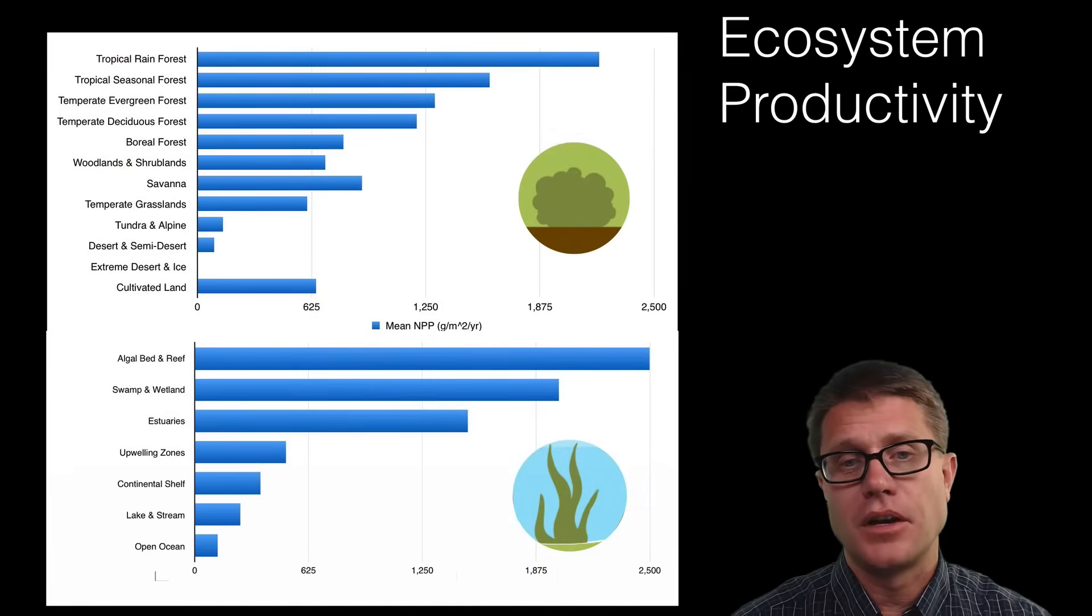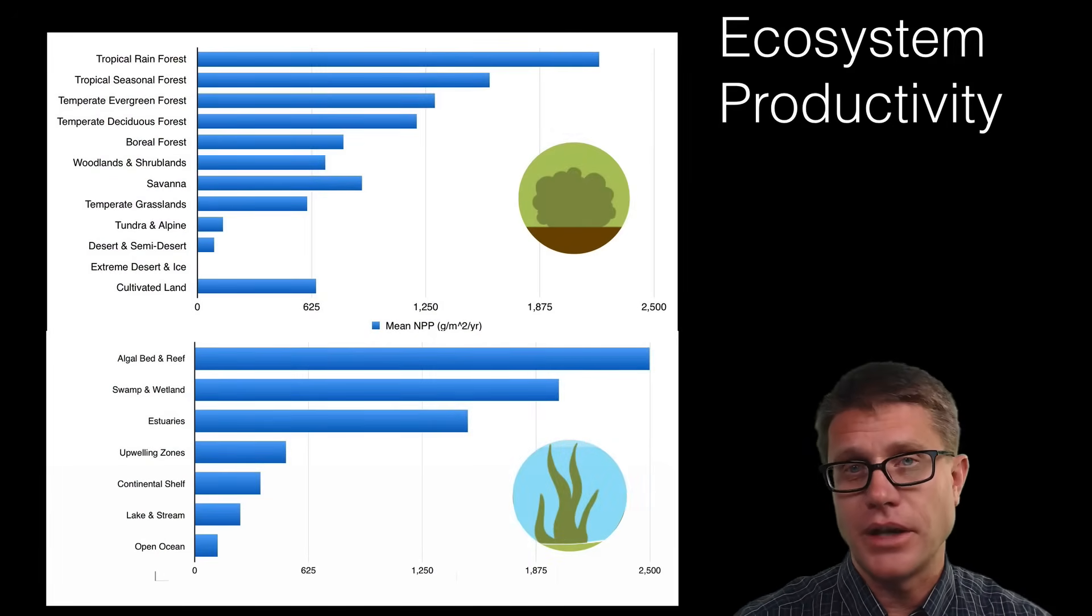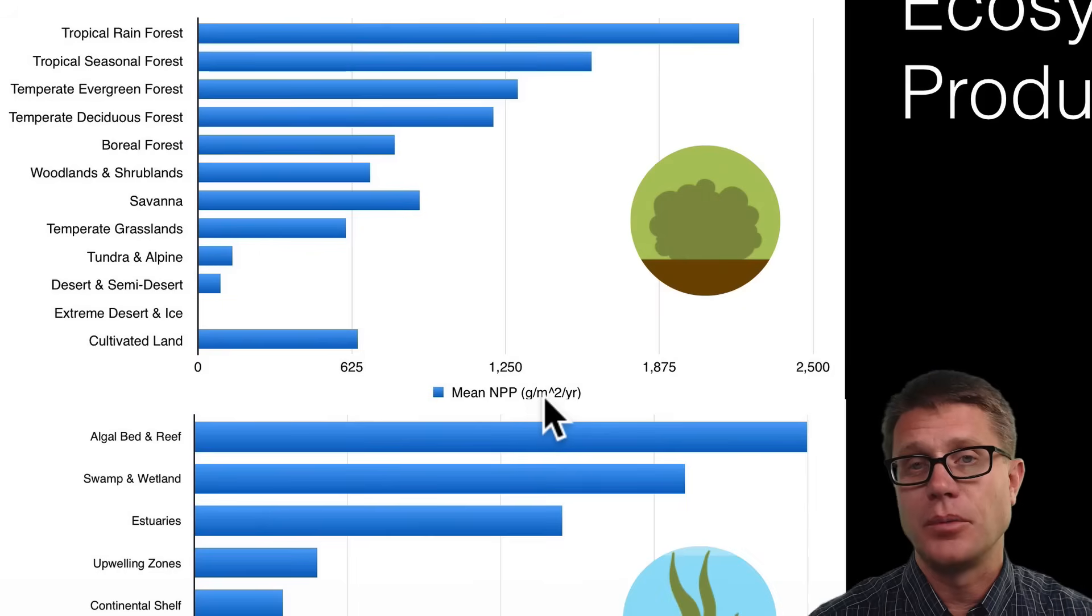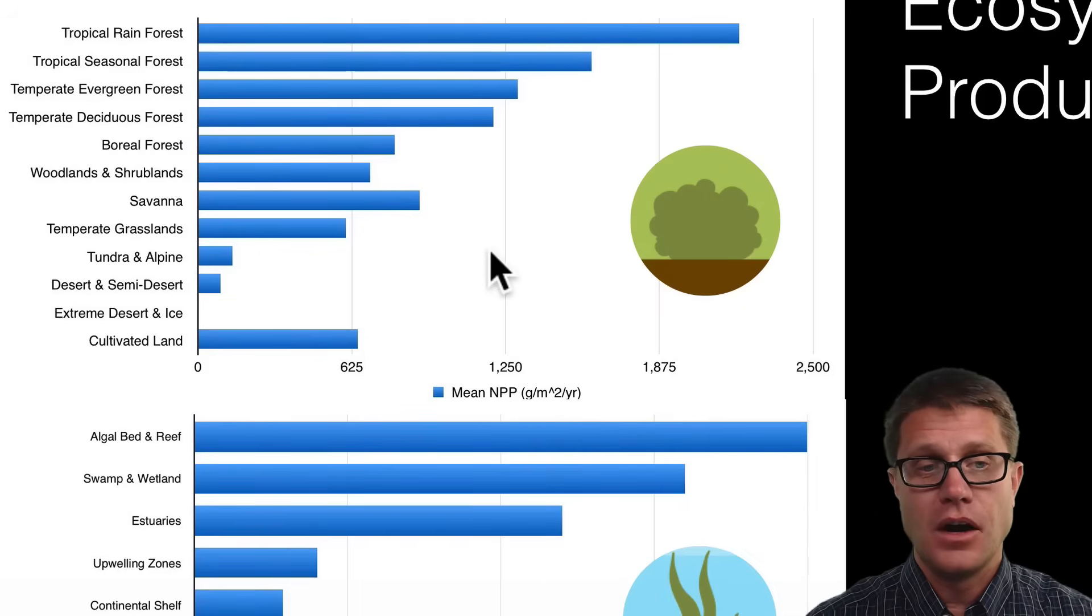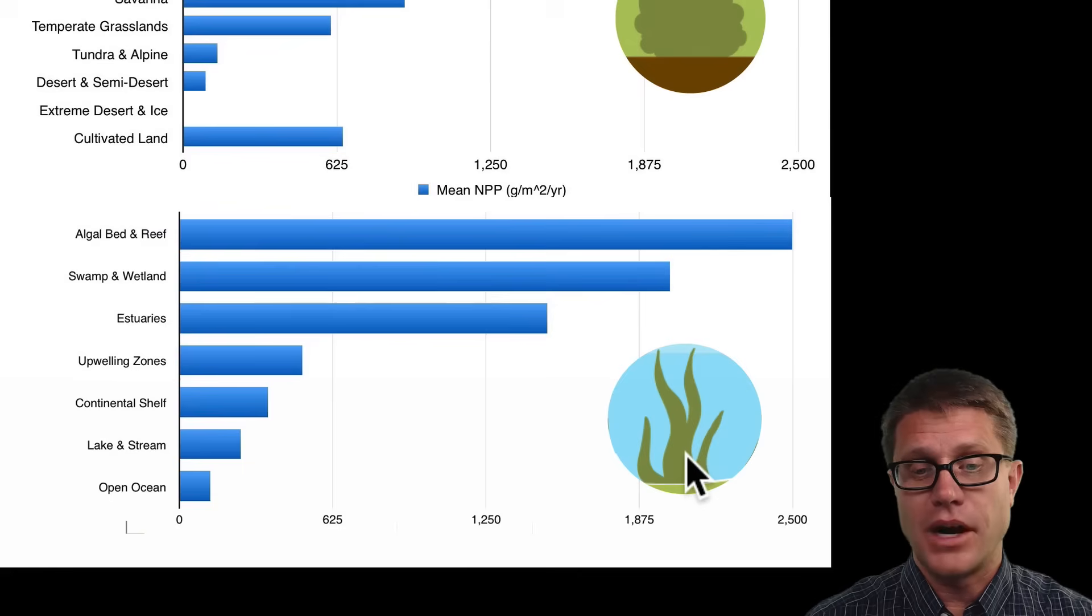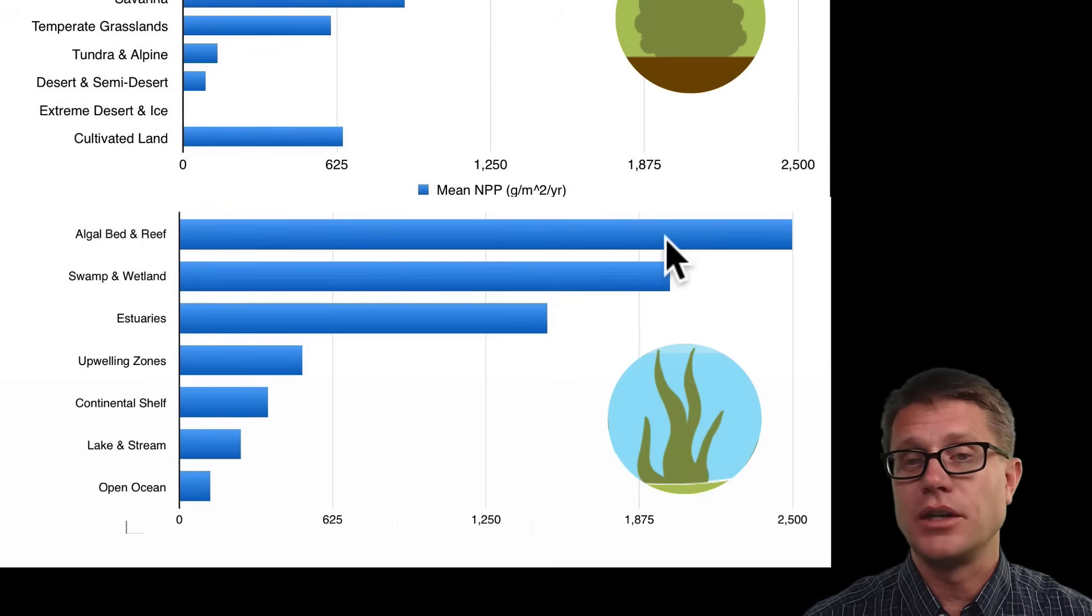If we look at the productivity on our planet we could compare different terrestrial and aquatic biomes all the way from the tropical rainforest which has high productivity. We are measuring that as the amount of material per meter squared per year all the way down to something like a desert. It is not very productive at all. What is interesting is cultivated land actually does not produce that much. We could compare that to aquatic systems like coral reefs are incredibly productive.